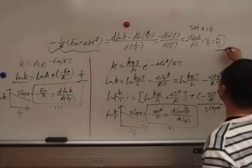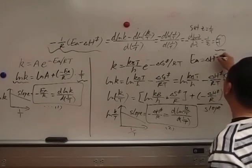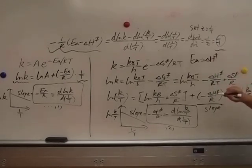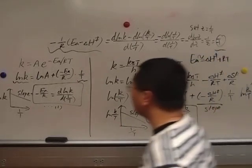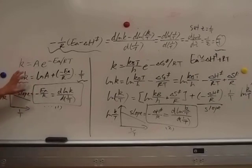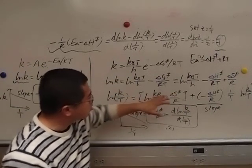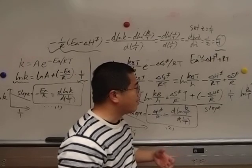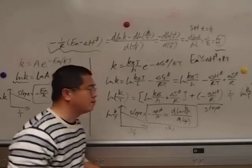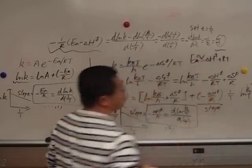So from this and this, we draw the conclusion Ea is equal to the enthalpy of activation plus RT. But this is not exactly correct because the Arrhenius equation is an empirical equation, it's not exact. Although the Eyring equation is exact, we assumed delta H and delta S are independent of the reaction temperature, and that assumption is not exact either. Therefore we have to say this is approximately equal to. Done.